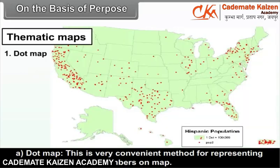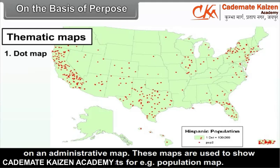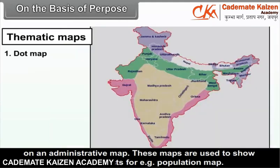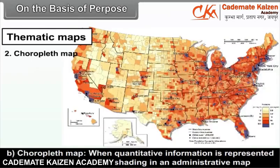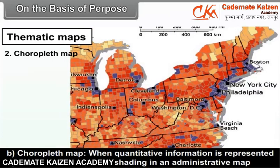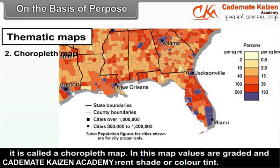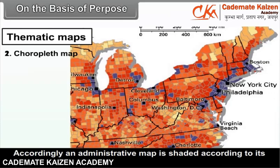Dot map: this is a very convenient method for representing absolute quantity or numbers on a map. Each dot represents a certain number of objects or given data, and according to the data, a number of dots are plotted on an administrative map. These maps are used to show concentration of objects, for example, population map. Choropleth map: when quantitative information is represented by color tints or specific shading in an administrative map, it is called a choropleth map. Values are graded and each grade is given a different shade or color tint, and the administrative map is shaded according to its grade.